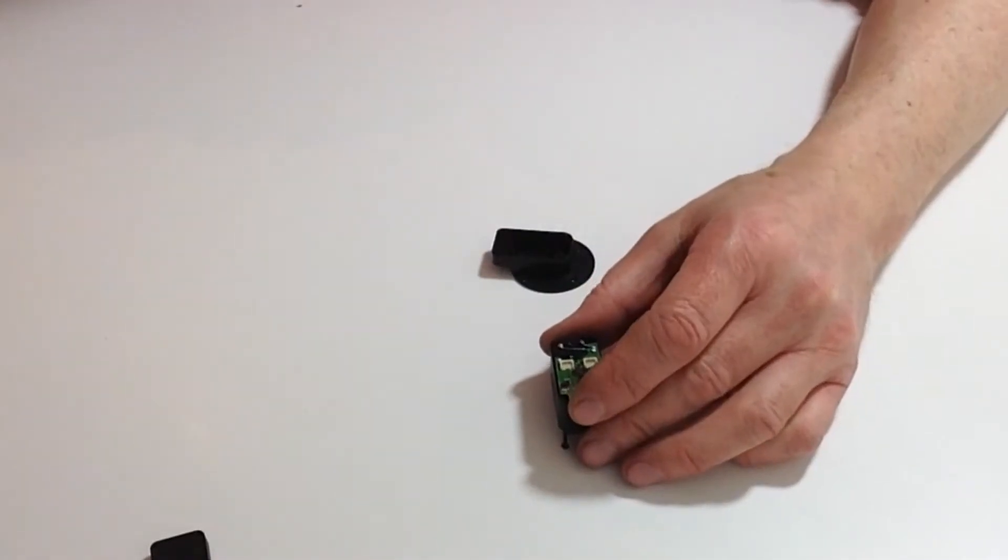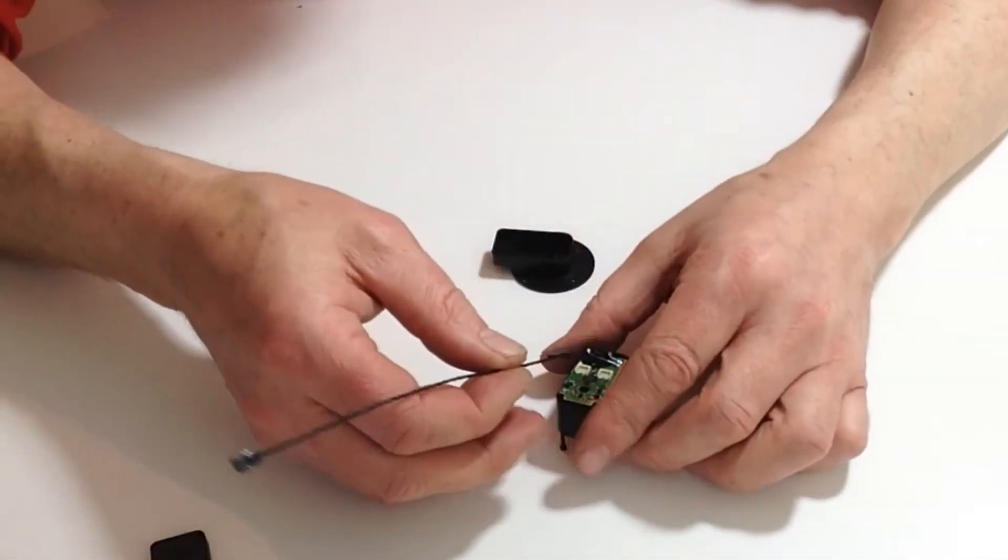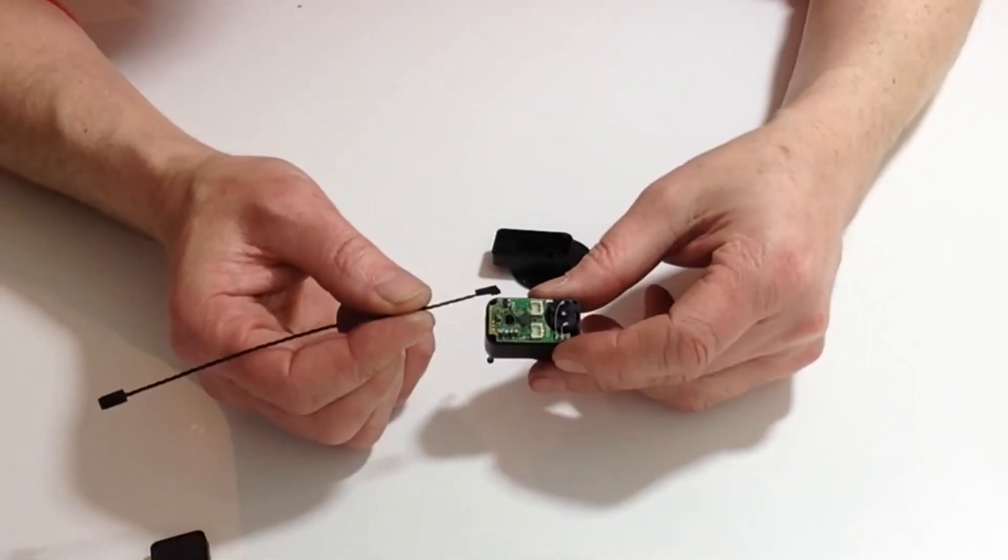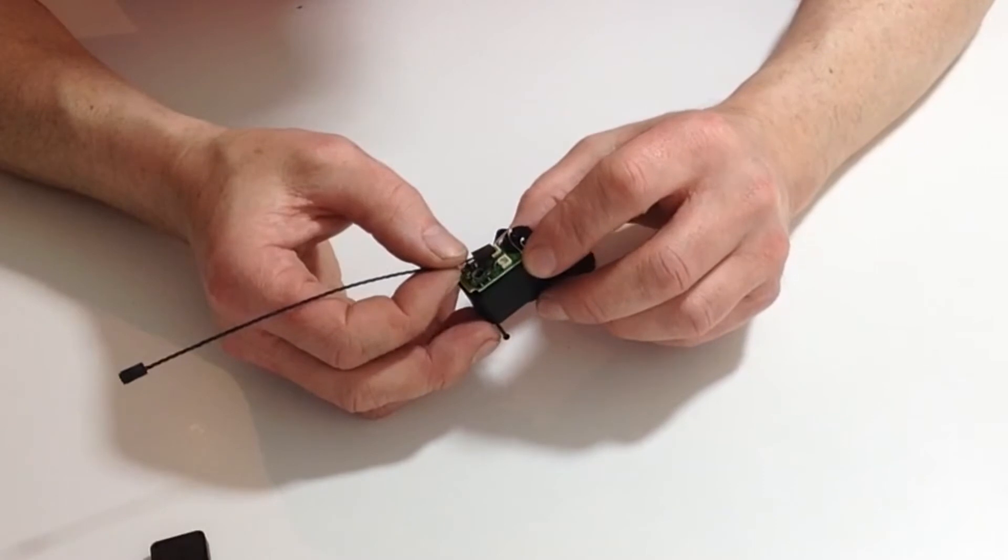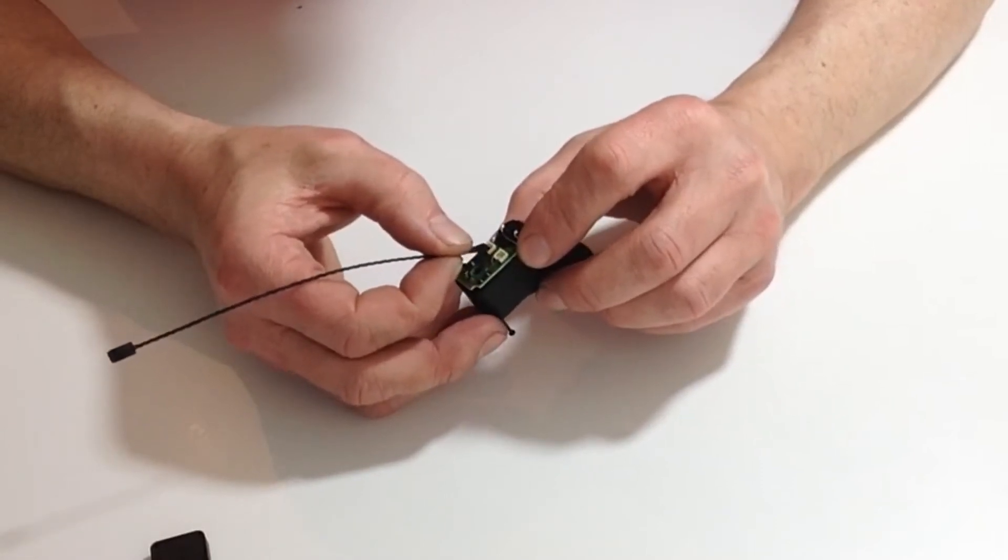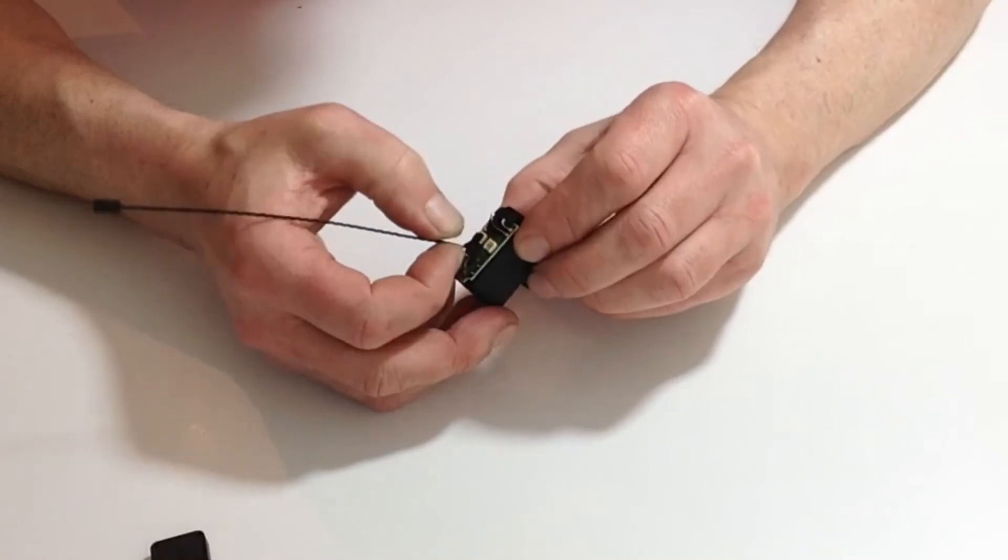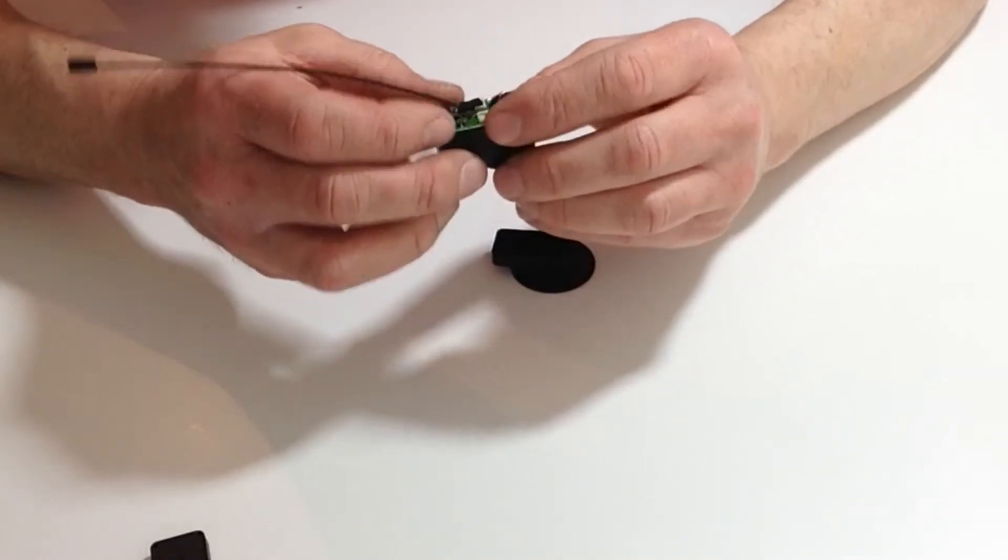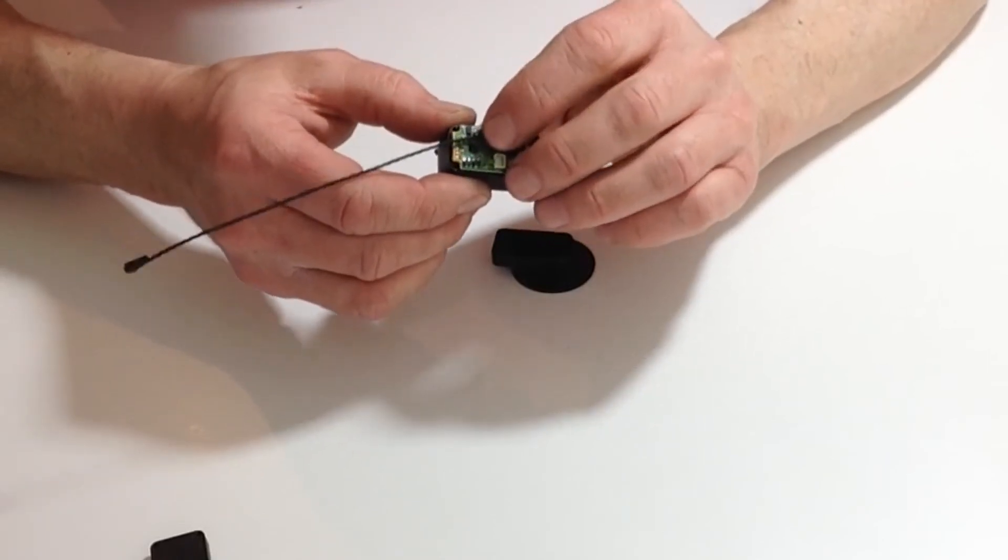Now take the servo wire, noticing the positioning of where that's going to be going. Place that down into position, pressing down onto the wire.